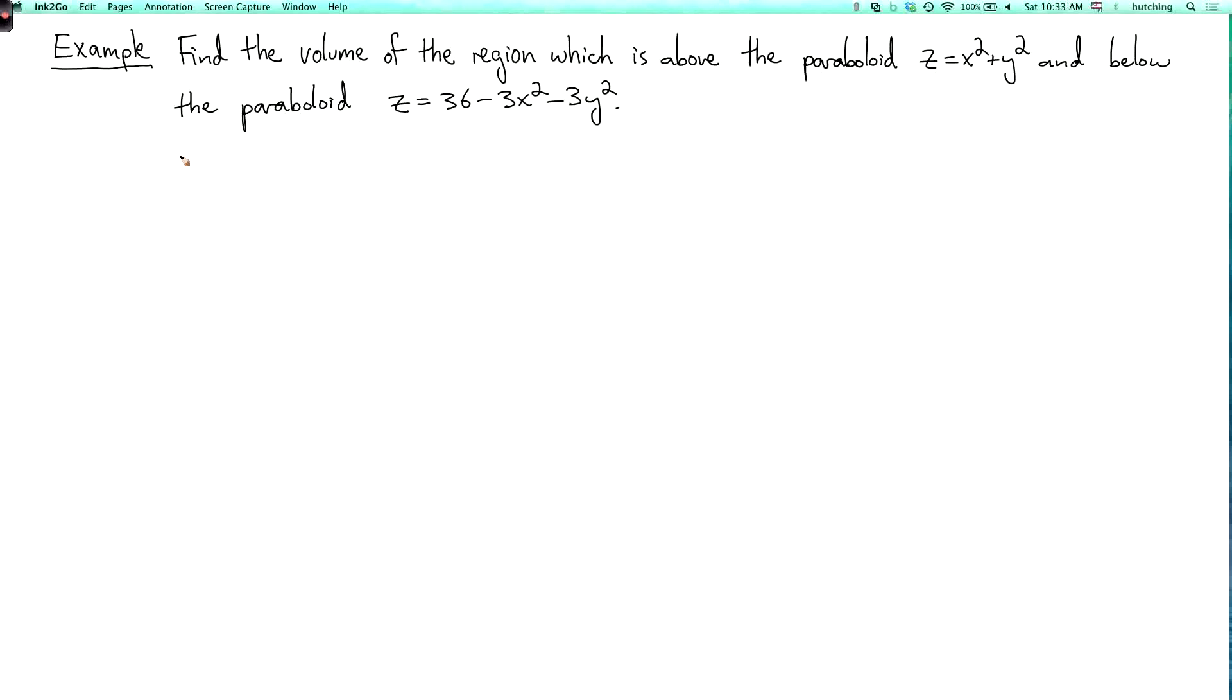We're now going to do another example of integration using cylindrical coordinates. Our example is to find the volume of the region which is above the paraboloid z equals x squared plus y squared, and below the paraboloid z equals 36 minus 3x squared minus 3y squared.